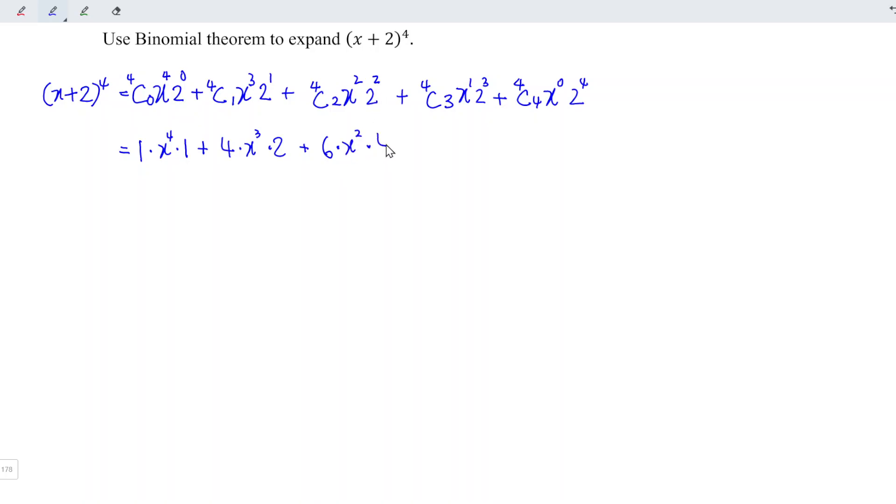Plus 4C2 is equal to 6 times x to power 2 times 2 squared which is 4. Plus 4C3 is equal to 4 times x times 2 power 3 which is equal to 8. And we add 4C4 is 1 times 1 times 16.